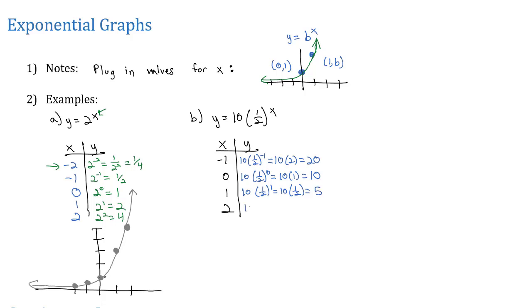And if we plug in 2, we get 10 times 1 half squared. And squaring, we know the power of a quotient rule, we square both, getting 1 fourth. And 1 fourth of 10 is 2.5.